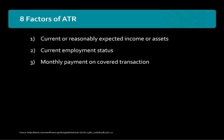The next factor a lender must consider is the monthly payment on a simultaneous loan. If at the time of closing the lender is aware that the borrower has an additional home equity line of credit or second mortgage secured by the same dwelling, they need to consider whether the consumer has the reasonable ability to make the combined payments of all loans — including taxes, insurance, and any additional assessments.